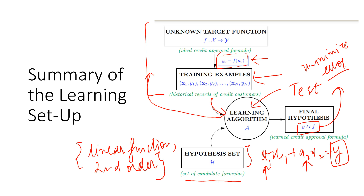That's it for lecture one of machine learning with data. In this lecture, we talked about formalizing some concepts of what is learning, how to set the problem up, and what are the essential components of learning and how they come together. In the next lecture, we'll start talking about a simple learning problem. Thank you.